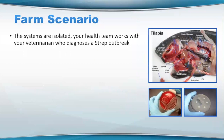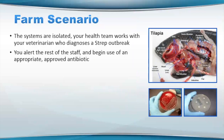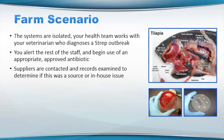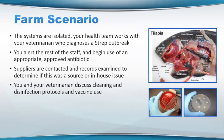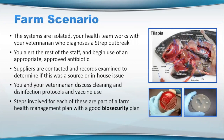Well, you are of course. So you have the systems isolated, your health team works with your veterinarian who diagnoses a strep outbreak. You alert the rest of the staff and begin use of an appropriate approved antibiotic. Your suppliers are contacted and you look at records to determine if this potentially was a fish source issue or an in-house issue. Then you and your veterinarian discuss cleaning and disinfection protocols and potential use of vaccines. These are just some of the steps involved for a really good farm health management plan with a good biosecurity plan.